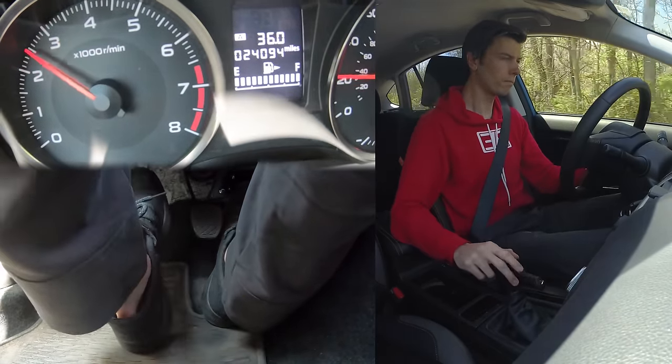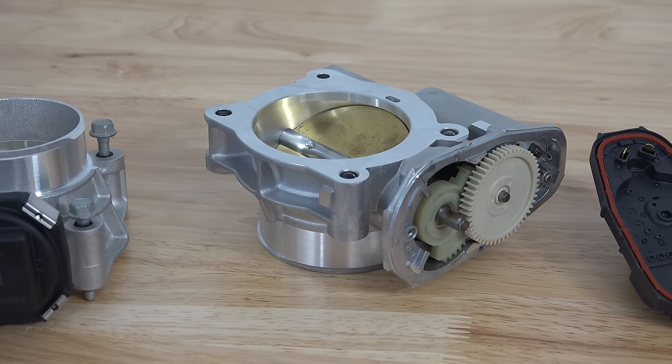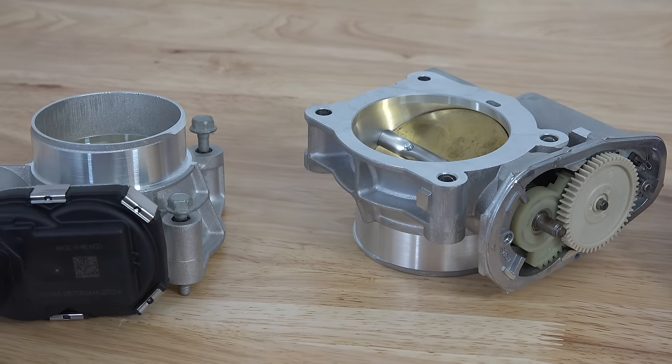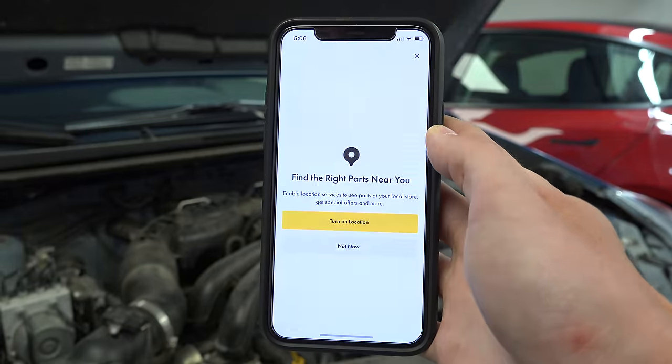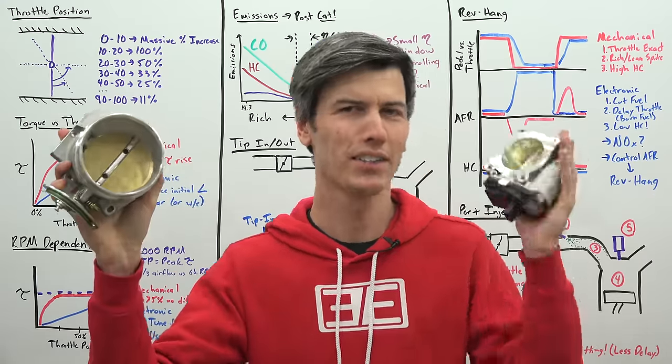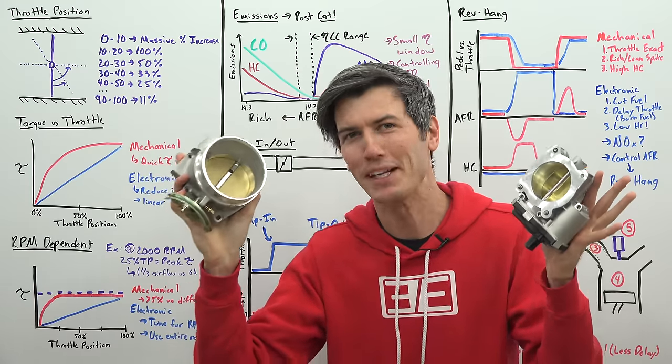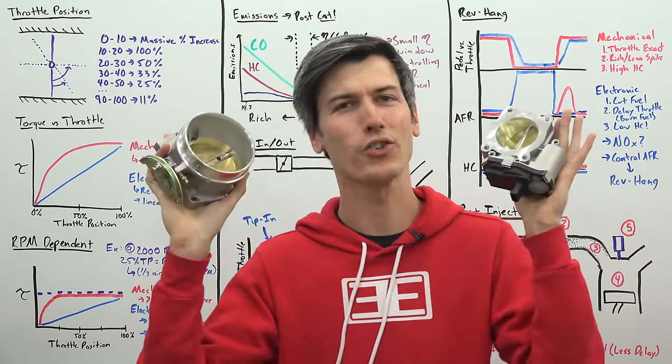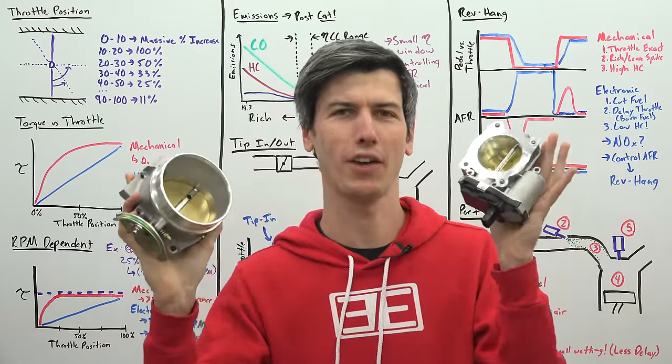Now a big thanks to Advance Auto Parts for sending parts for this video demonstration. You can use the Advance Auto Parts mobile app for your car part needs. So how did we get from here to here? Well, despite what many enthusiasts will say about electronic throttles, there's actually quite a few advantages that they offer.